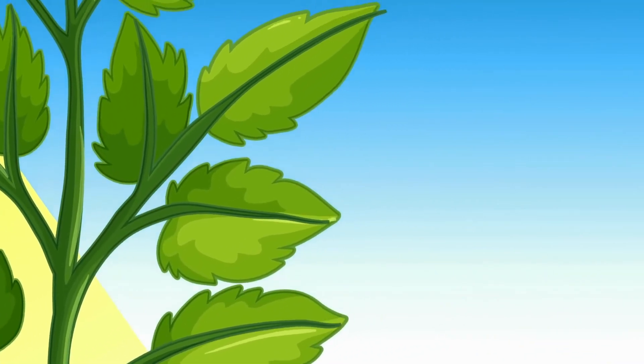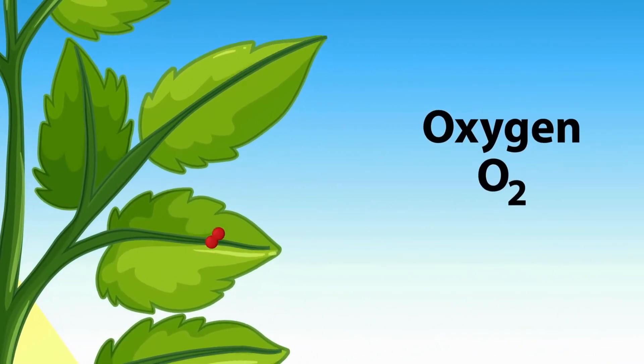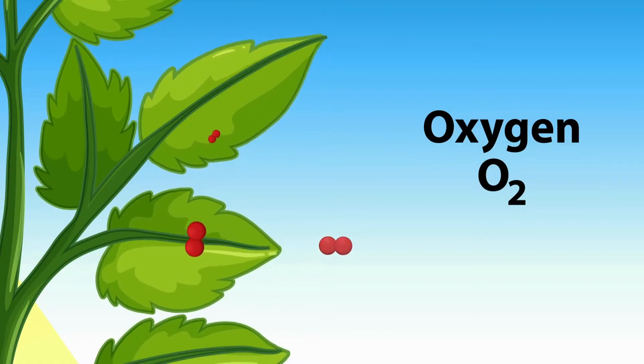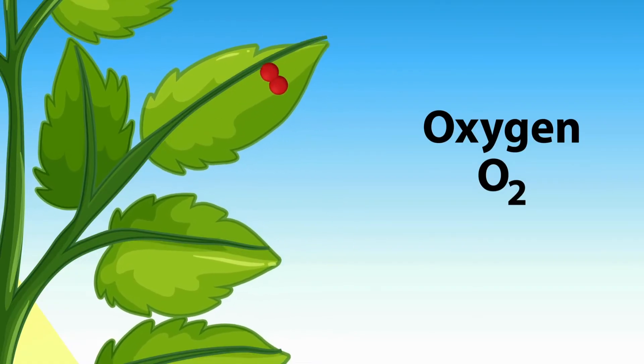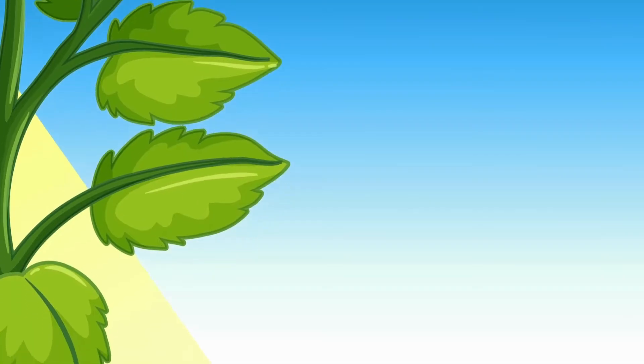Now the plant has all the ingredients it needs for photosynthesis. During photosynthesis, the plant produces oxygen, which is released into the air. This is the oxygen we breathe.